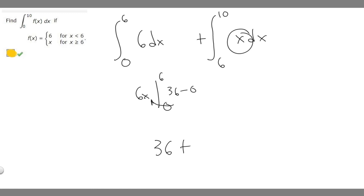So the antiderivative of x is going to be x squared over 2, and we add c, but we can ignore it. And we've got to check it from 6 to 10.